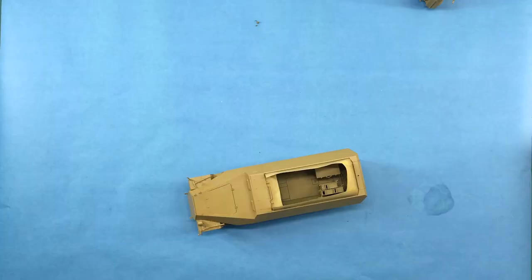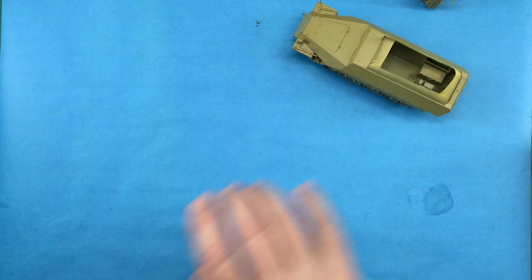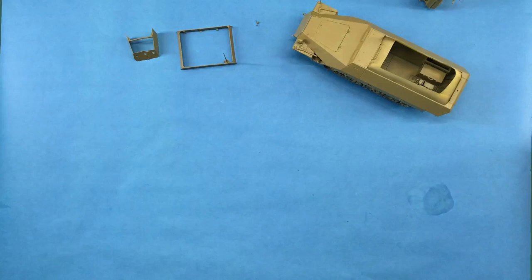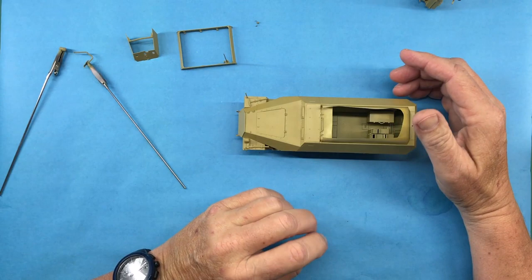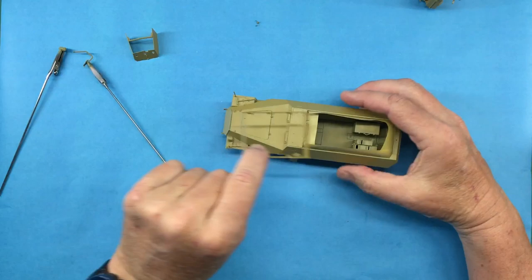Alright, so I've got the base color on there and now I can start thinking about some camouflage. So I think the first thing I'm going to do is glue this on because this is going to have to be part of the camouflage paint.